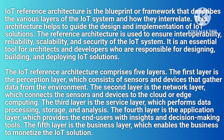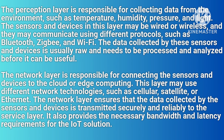The IoT reference architecture comprises five layers. The first is the perception layer, which consists of sensors and devices that gather data from the environment. The second is the network layer, which connects sensors and devices to the cloud or edge computing. The third is the service layer, which performs data processing, storage, and analysis. The fourth is the application layer, which provides end users with insights and decision-making tools. The fifth is the business layer, which enables the business to monetize the IoT solution.